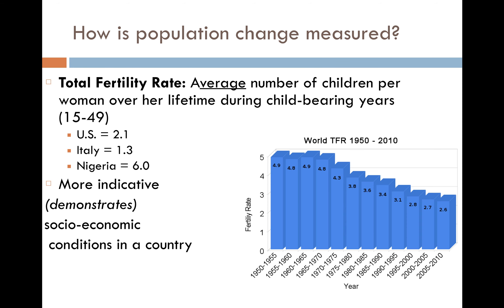Another important statistic — different from crude birth rate — is total fertility rate. Total fertility rate is the average number of children per woman that one woman would have over her lifetime during her childbearing years, generally defined as ages 15 to 49. There are exceptions, but these are averages. This helps us better understand the characteristics of a population because it shows us the number of children being born and also helps us understand the level of development of a given place.